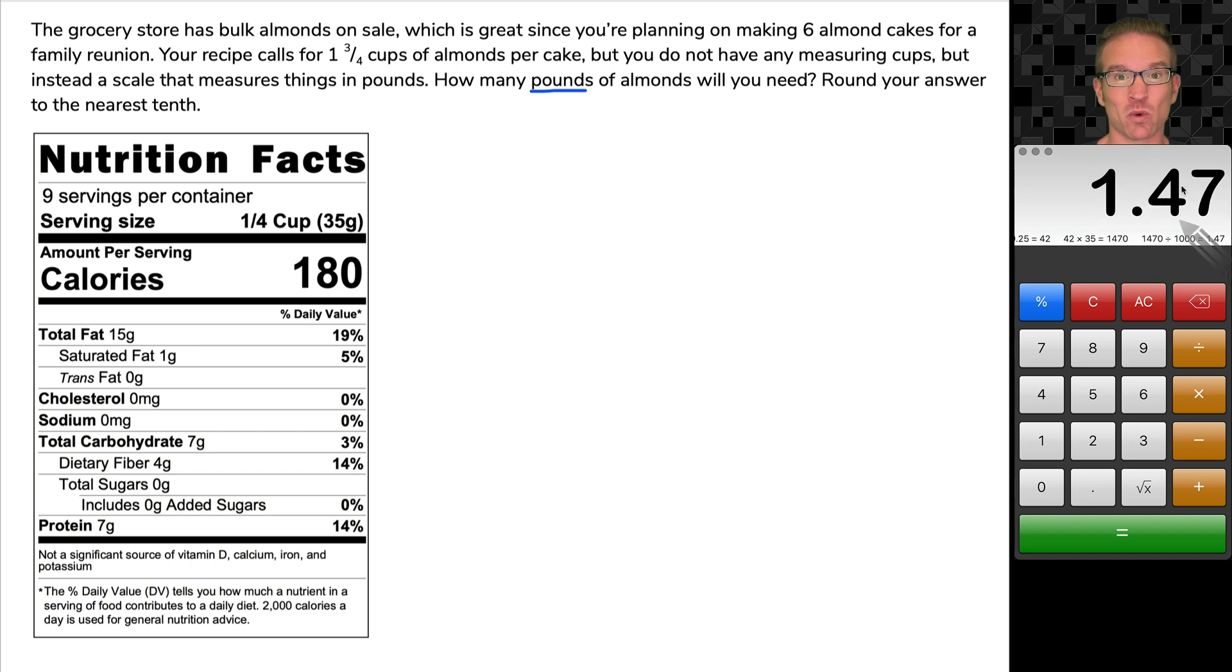Now the other conversion, 2.2 pounds equals one kilogram. Well, we have almost one and a half kilograms, but this last step here to figure out pounds, if you have kilograms, multiply your kilograms by 2.2. And again, that's because 2.2 pounds is equal to one kilogram. Let's press equals.